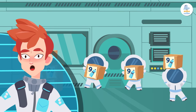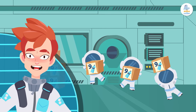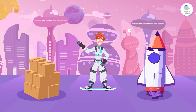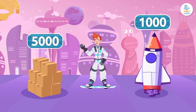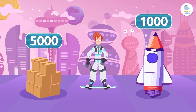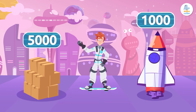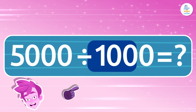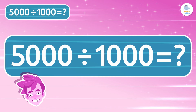Thank goodness — you don't know how thirsty spacewalks can make you! Can you help me with one last task? We want to send rockets to explore space and we have 5,000 boxes of supplies to distribute among 1,000 rockets that are ready to take off. How many boxes should we put in each rocket so that they all have equal amounts? Let's find out by dividing 5,000 by 1,000.